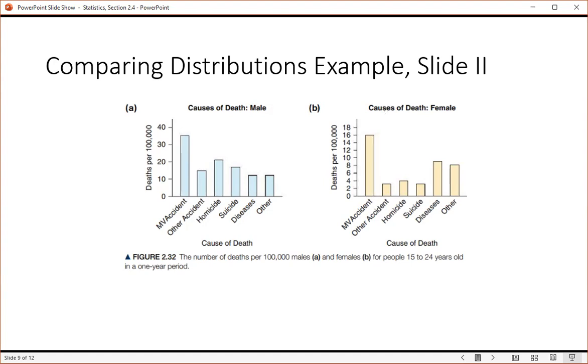And then second, we can look at the variability, or the diversity. And so if you compare these two, you can see that the bars ignoring the motor vehicle bar, the remaining bars are of close to the same height. That's not true for the women. That's not true for the females.